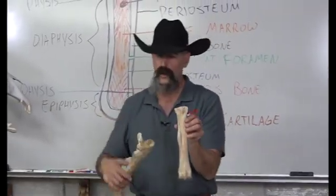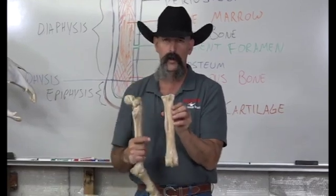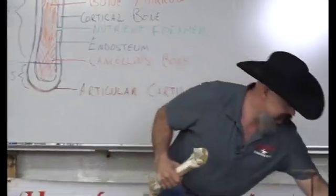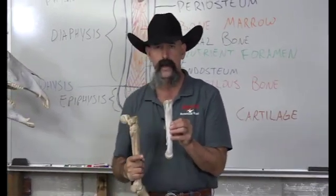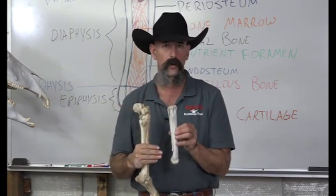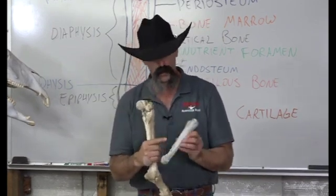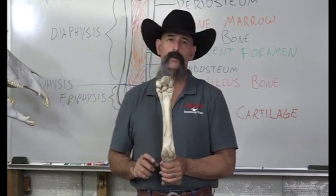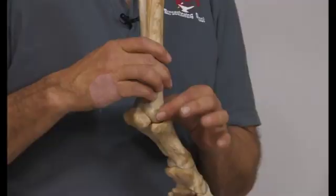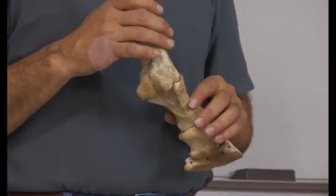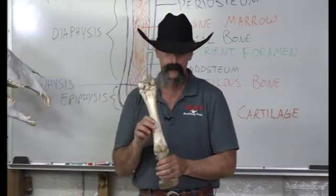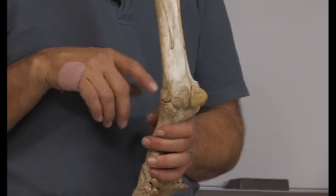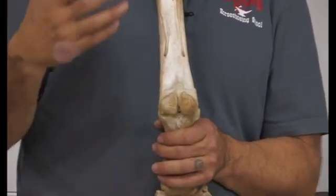Here's a cannon bone with the splint bones removed. The interosseous ligaments that held the splint bones to the cannon bone did not ossify, but often they do ossify and you could have a splint — an actual growth on the outside of the bone. The second metacarpal is medial and the fourth is lateral. The distal cannon bone makes up the proximal end of the fetlock joint, also called the metacarpophalangeal joint. On the palmar aspect of the distal metacarpus are the sesamoid bones, which change the direction of pull for a tendon, much like a pulley in a crane.